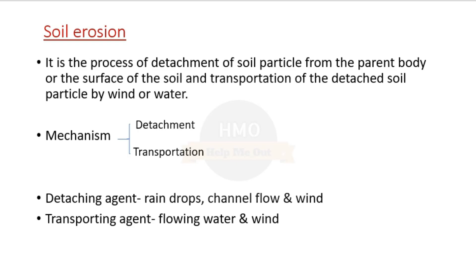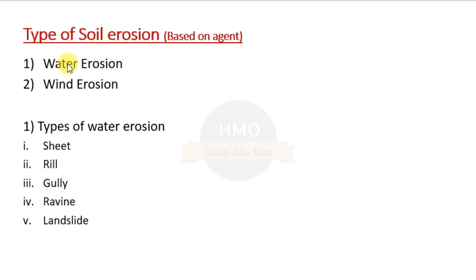Soil erosion is a process of detachment of soil particles from the parent body or the surface of the soil, and transportation of the detached soil particles by wind or water. There are two mechanisms: detachment — the separation of particles from parent material — and transportation — the movement of soil particles from one place to another. Detachment agents are raindrops, channel flow, and wind, while transporting agents are flowing water and wind.